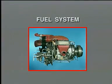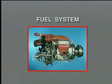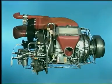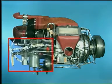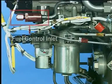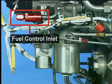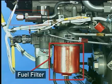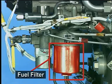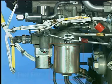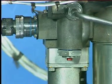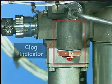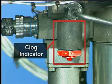Fuel System. The fuel supply from the aircraft is delivered to the fuel control unit inlet. It is filtered by a fuel filter installed on the fuel control unit housing. The filter condition is monitored by a clog indicator.